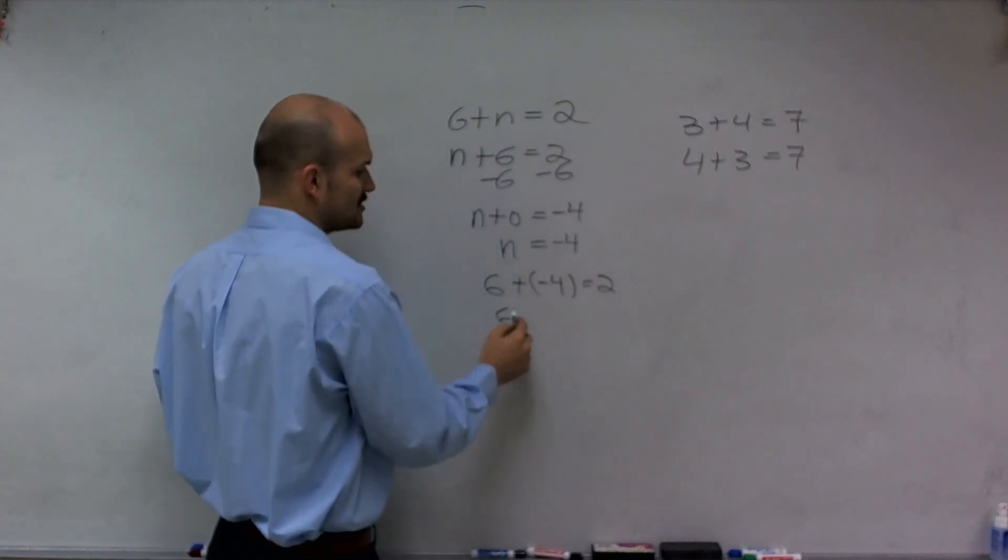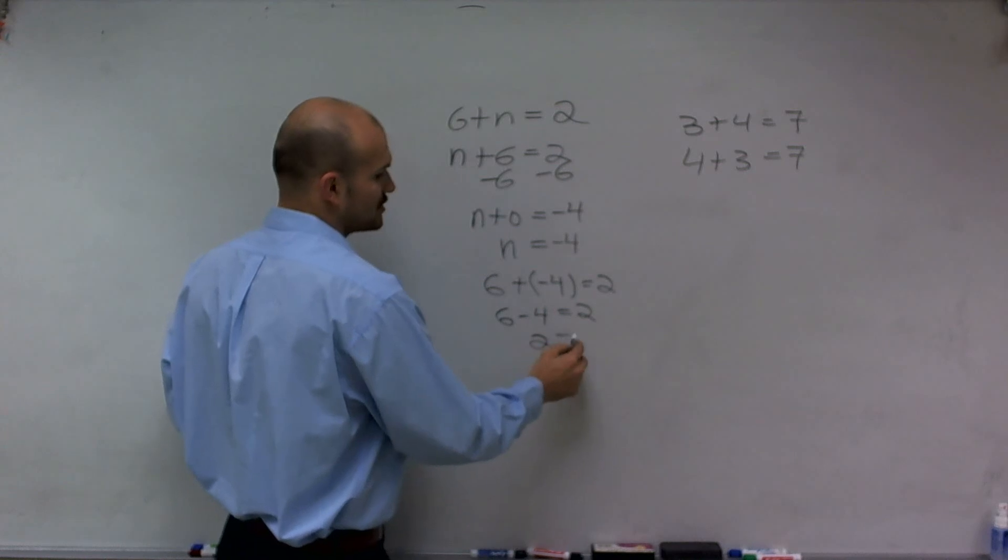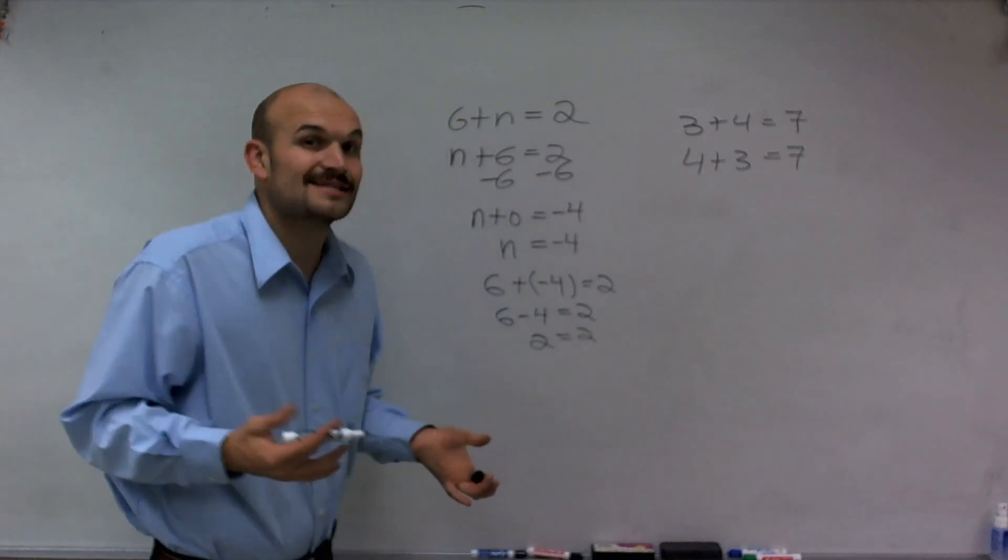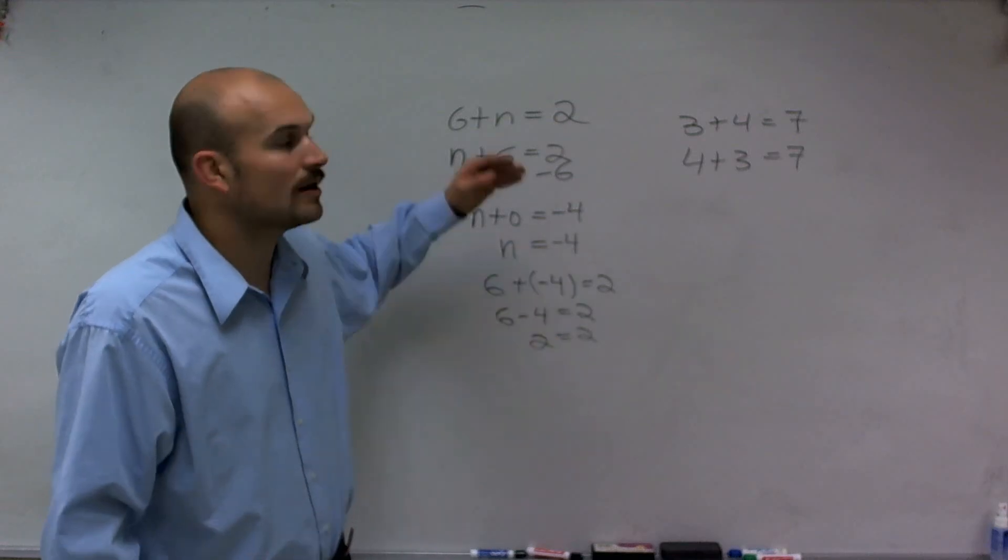I can eliminate my parentheses and just rewrite this as 6 minus 4 equals 2. Therefore, 2 equals 2. Ensuring that I solved the problem correctly, I do know that when n equals negative 4, my statement is true.